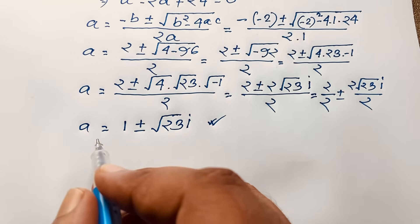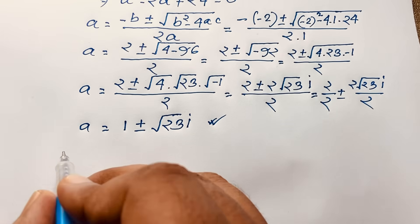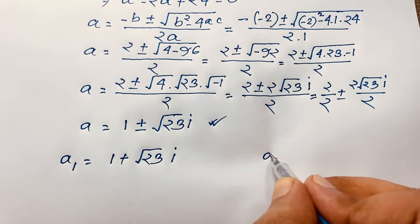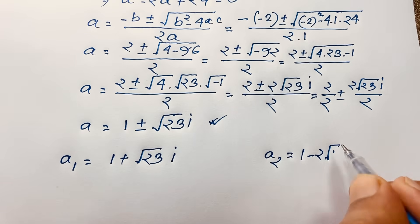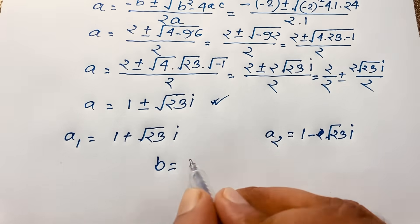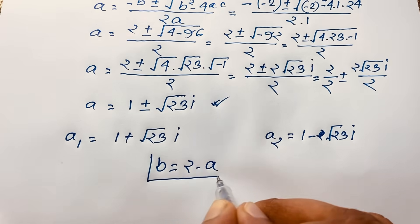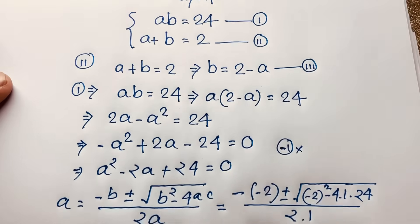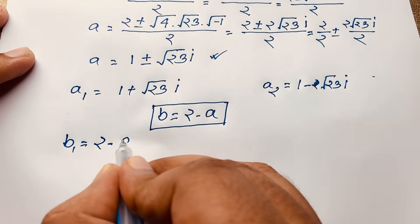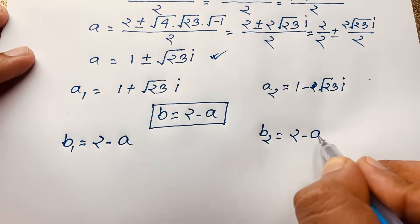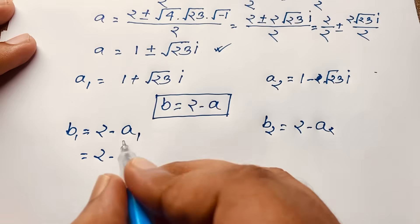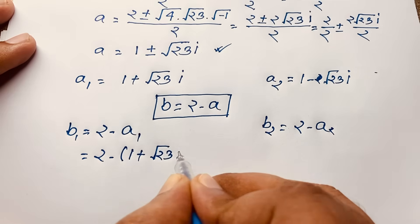Now let's find out the value of b. We have a₁ equals 1 plus √23·i, and a₂ equals 1 minus √23·i. From our third equation, b equals 2 minus a. So b₁ equals 2 minus a₁, and b₂ equals 2 minus a₂. Now 2 minus a₁, where a₁ is 1 plus √23·i, gives 2 minus (1 plus √23·i).